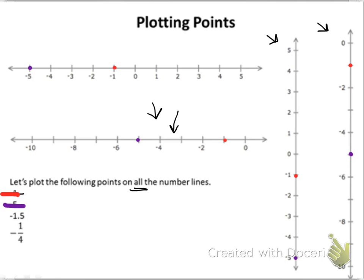The next one is negative 1 and 5 tenths. This is a decimal, and I don't see any decimals on any of my number lines, but let's try our best. I know that negative 1 and 5 tenths will be halfway between negative 1 and negative 2. Since negative 1 is right here and negative 2 is right here, negative 1 and 5 tenths must be halfway in between the two of them. I'm going to try my best to get this exactly in the middle. For the next number line going by 2s, I know negative 1 is here and negative 2 is here, so negative 1 and 5 tenths must be halfway in between those two points.